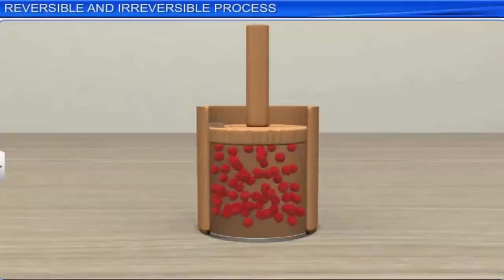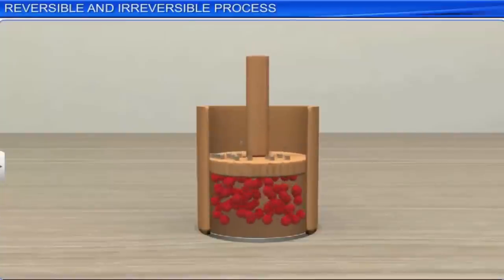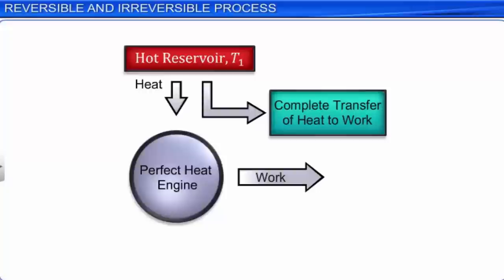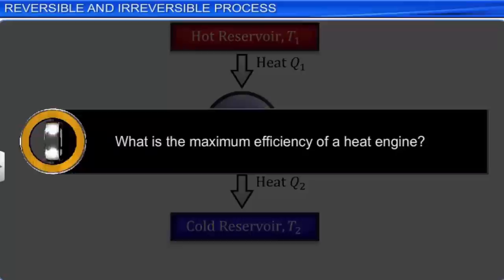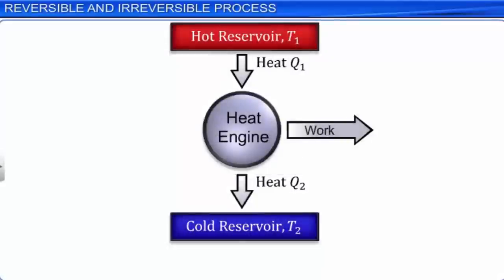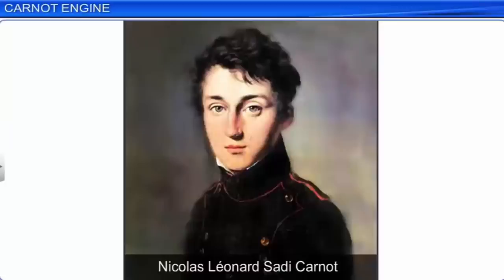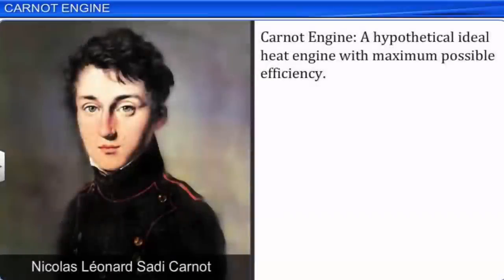According to the second law of thermodynamics, we cannot construct a heat engine with 100% efficiency. So what is the maximum efficiency? If a heat engine working between two temperatures T1 and T2 passes through idealized reversible processes, it achieves the highest efficiency possible. Much before the concepts of thermodynamics were established, Nicholas Leonard Sadi Carnot, a French physicist, proposed a hypothetical ideal heat engine.